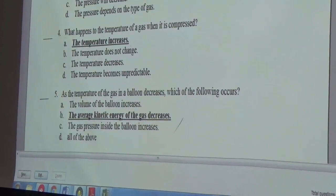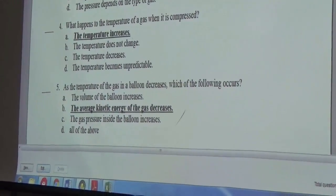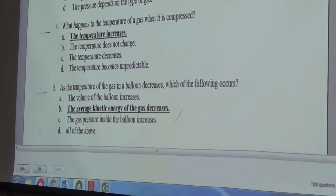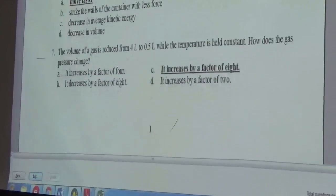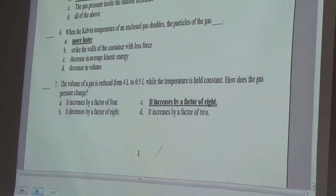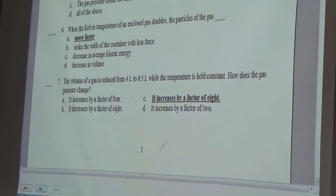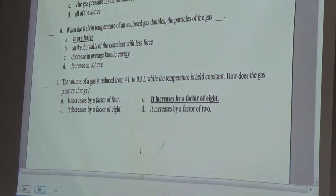As the temperature of a gas in a balloon decreases, which of the following occurs? A, the temperature of an enclosed gas doubles. When the Kelvin temperature of an enclosed gas doubles, the particles of the gas... A, the pressure.